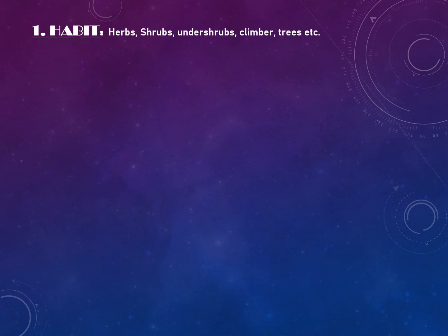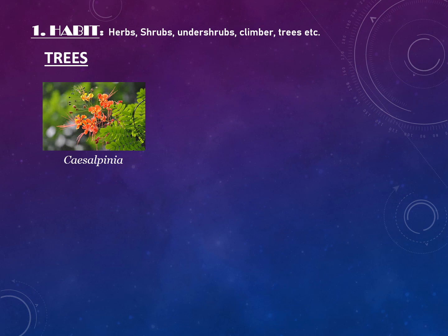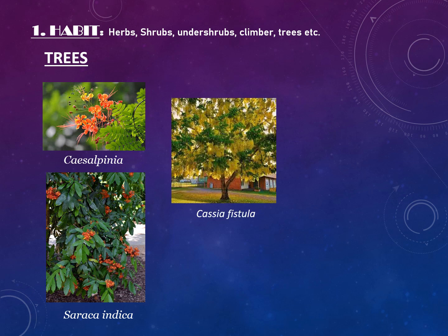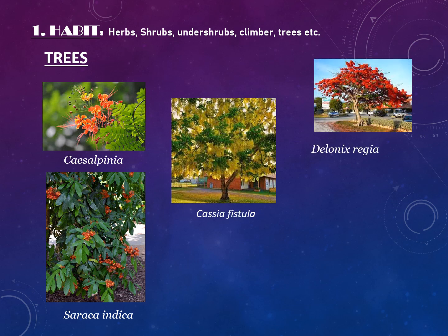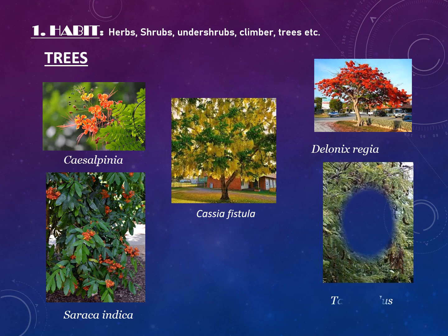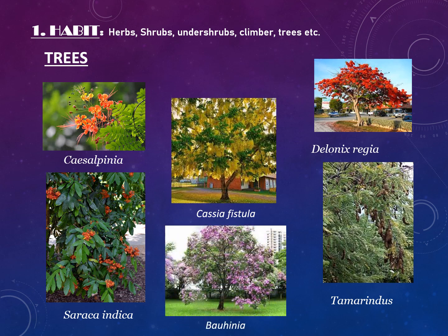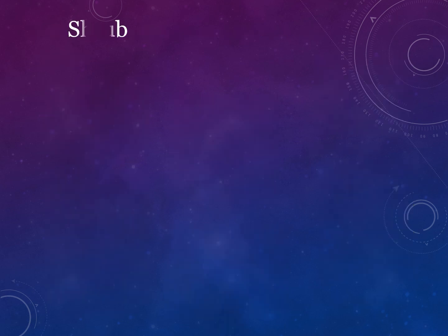Now let's discuss the habit of the plant. It shows great variation in habit — it may be tree, shrub, or herb. Trees include Caesalpinia, Saraca indica, Cassia fistula or Amaltas, Delonix regia or Gulmohar, Tamarindus or Imli, and Bauhinia. Besides this, sometimes all types of plants occur in this genus.